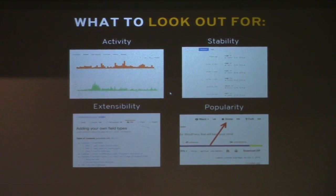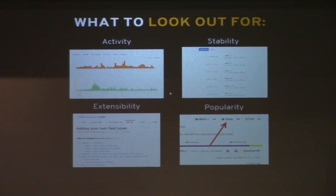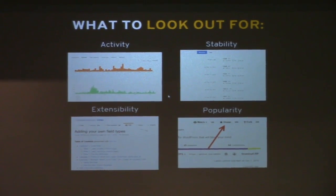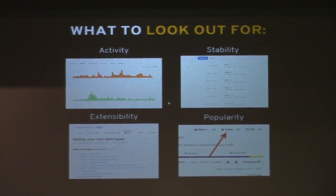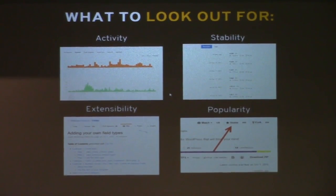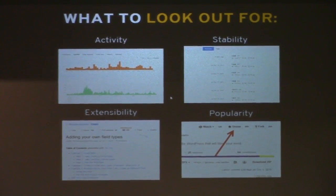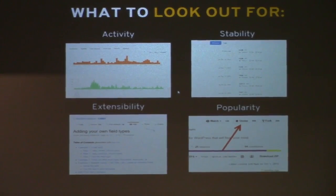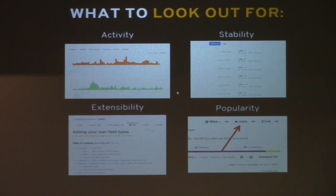So what to look out for when you're evaluating these different repos you find on the internet. Activity — Bitbucket and GitHub make it really easy to see what kind of check-ins and commits have been made over the last year or time span. Stability — are they using semantic versioning, are they properly tagging it? Extensibility — what kind of documentation, what kind of methods are there to extend the functionality? And how popular is it? You can see the stars on GitHub, Bitbucket is very similar, as well as some other repos like Beanstalk.